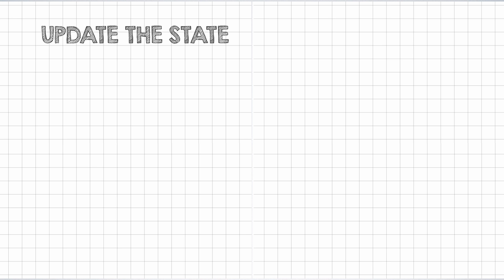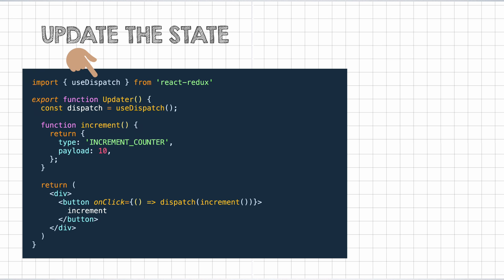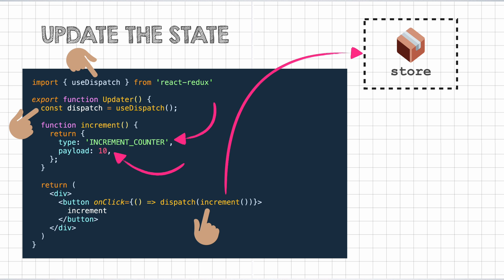Now let us see how we can trigger updates on the values in the store. That can be done with the help of another hook called useDispatch. Let us say we have an updater component that is supposed to update the count in the store. We utilize the useDispatch hook to get hold of the dispatch function. We then call this dispatch function with a special object that has a type and a payload property. The type specifies what kind of action we want to execute and the payload is the data supplied to execute that action. This dispatched action goes to the store and then the store updates the value of the state based on the action that is supposed to be performed. At the end of all this, we get the latest value of the state reflecting in the store.